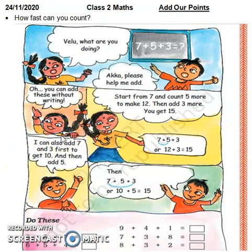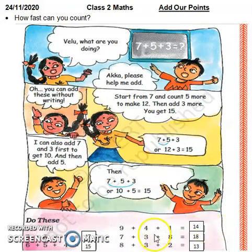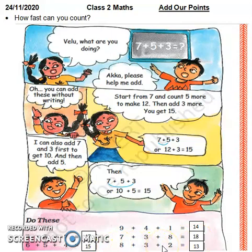तो यह वाली exercise — अब आप मुझे help करेंगे। आप लोगों की help से अभी questions पूरे कर लिए: 5+5=10, 10+7=17, 6+5=11, 11+4=15, 9+1=10, 10+4=14, 7+3=10, 10+8=18, 8+3=11, 11+2=13। तो बेटा, यह count on करके भी आप कर सकते हो। ओके।